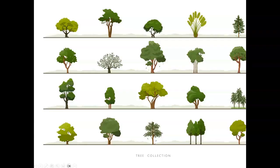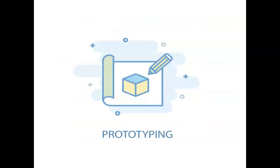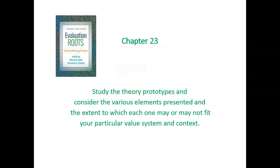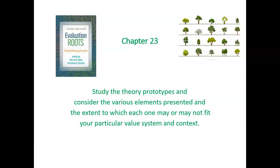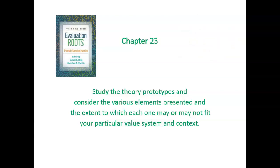That takes us into what the book ends up doing at the end. It offers a final chapter that is prototyping different theories, not based on the theory tree, but looking at each theory by itself. Chapter 23 studies the theory prototypes and considers the various elements presented and the extent to which each may or may not fit your particular value system and context. It presents the theories each as a distinct theory, each offering a particular approach to evaluation without attachment to the theory tree.